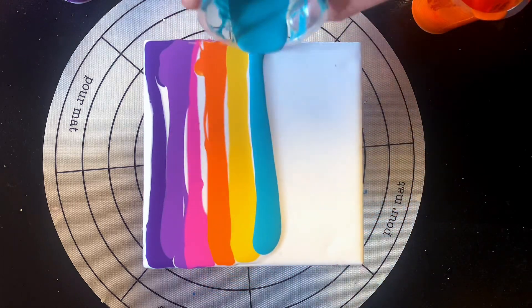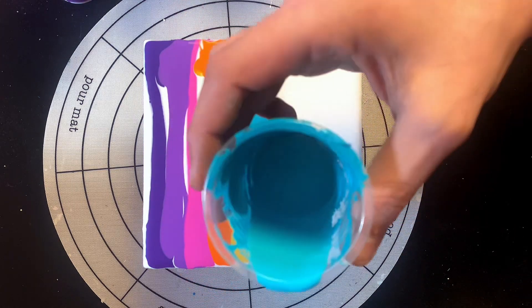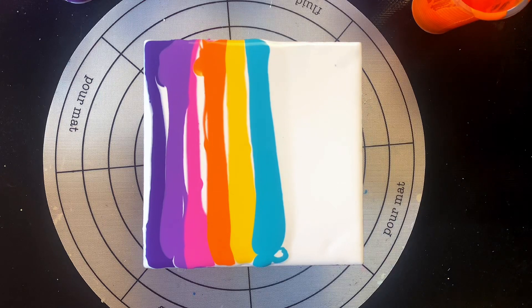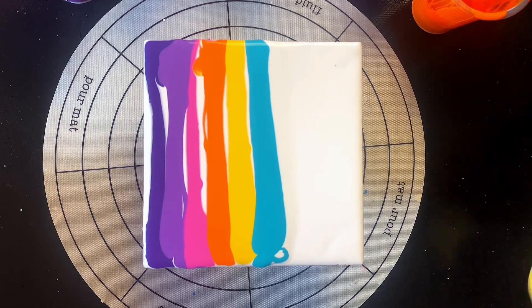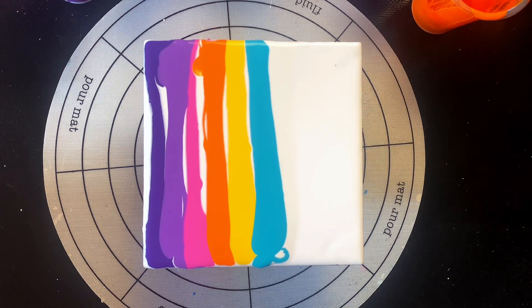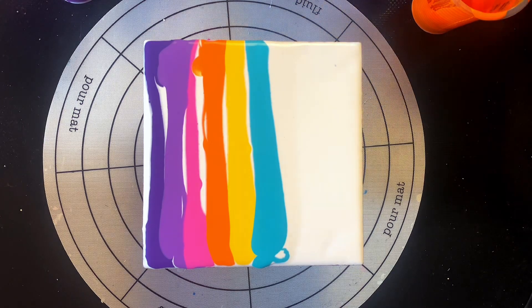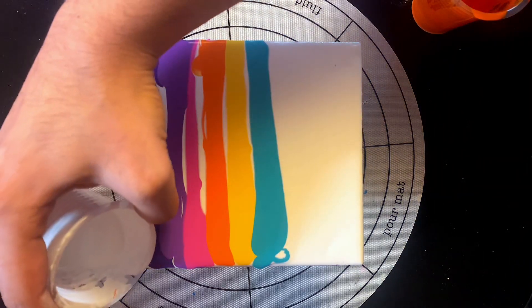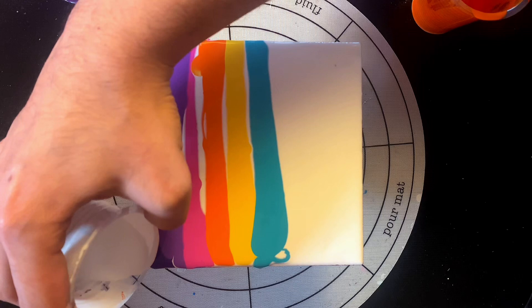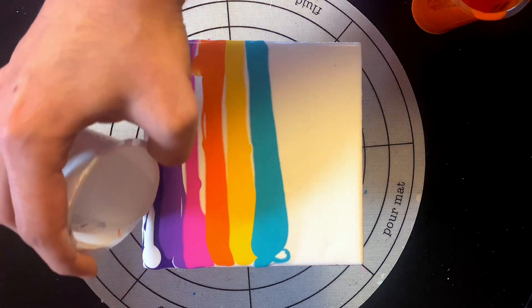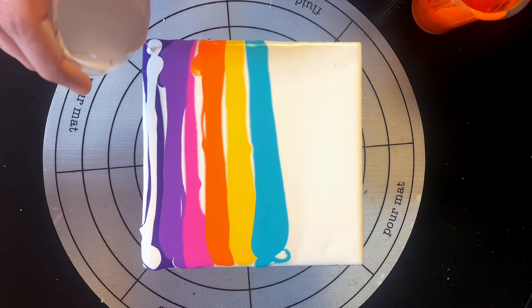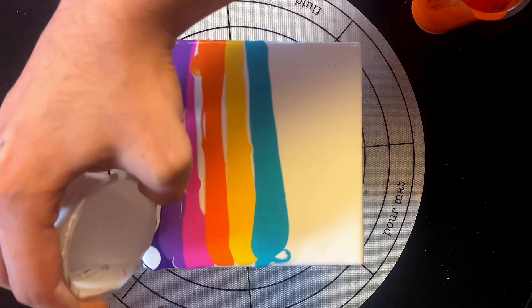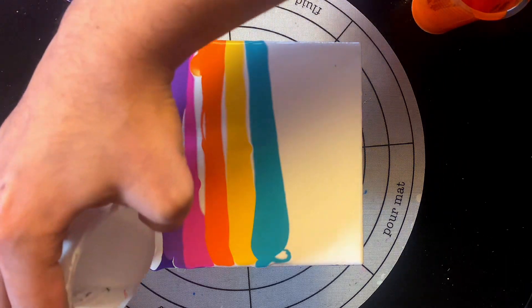The base of everything is really this recipe, but the ingredient we're adding here to create cells is a cell additive called silicone oil. We are putting one drop in each of the colors except the white. So the white in the base has no silicone, the white I'm going to add right now to swipe with also has no silicone, but the two shades of purple, the pink, the orange, the yellow, and the turquoise all have one drop of silicone each.